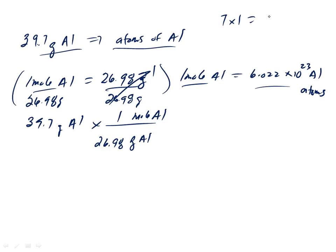Remember this in math: seven times one is seven. One's called an identity because it doesn't really change the amount that we have. It's still seven. Well the same thing is here. We have 39.7 grams of aluminum. All we're doing here is changing the units from grams to moles. We still have 39.7 grams of aluminum because this is just an identity. It's a conversion factor.